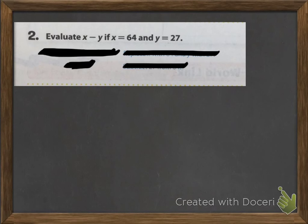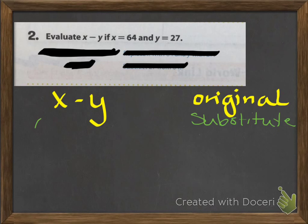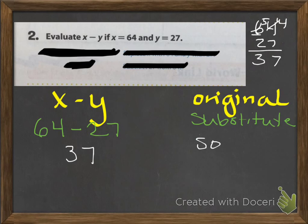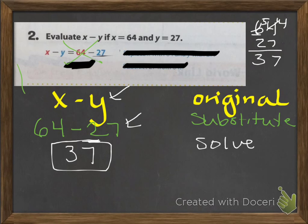Evaluate X minus Y if X is 64 and Y is 27. Write your original problem: X minus Y — write 'original' off to the side. Then substitute: X is 64 minus Y, which is 27 — write 'substitute' to the side. Do the work: 64 minus 27 equals 37. Write 'solve' to the side, and your final answer of 37 should be clearly visible. You can put a box around it — I should always be able to see your very last piece as your answer.